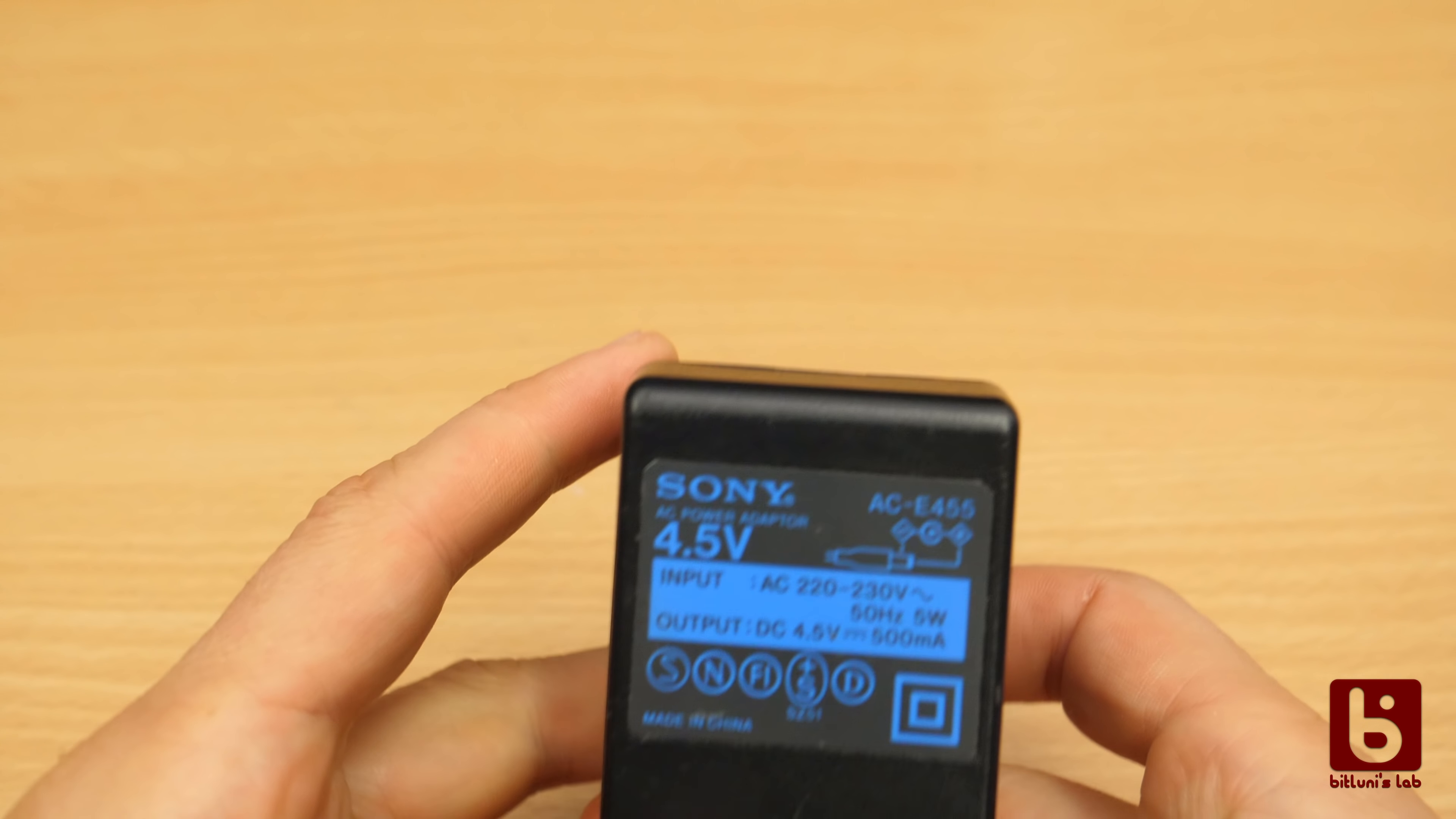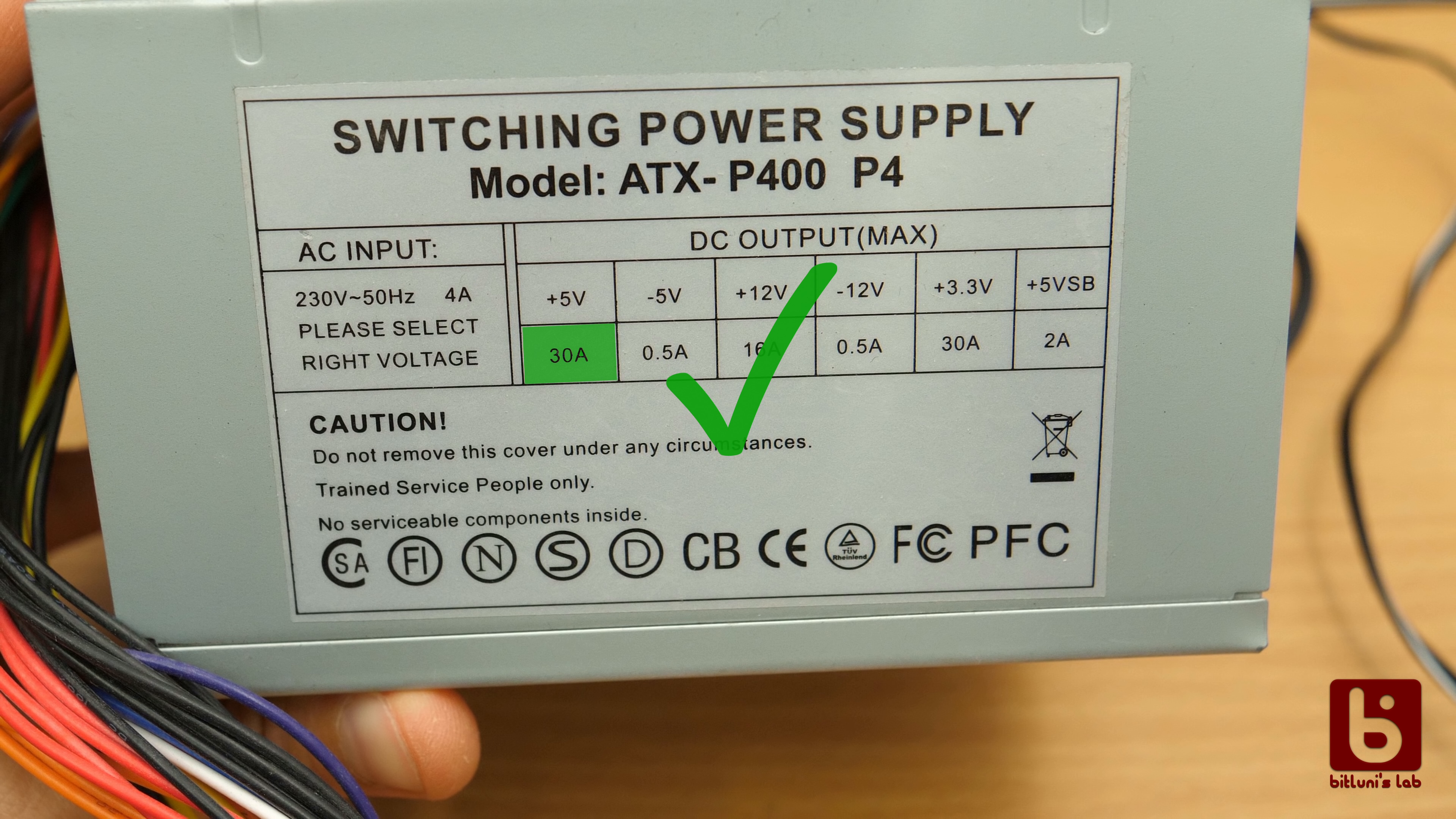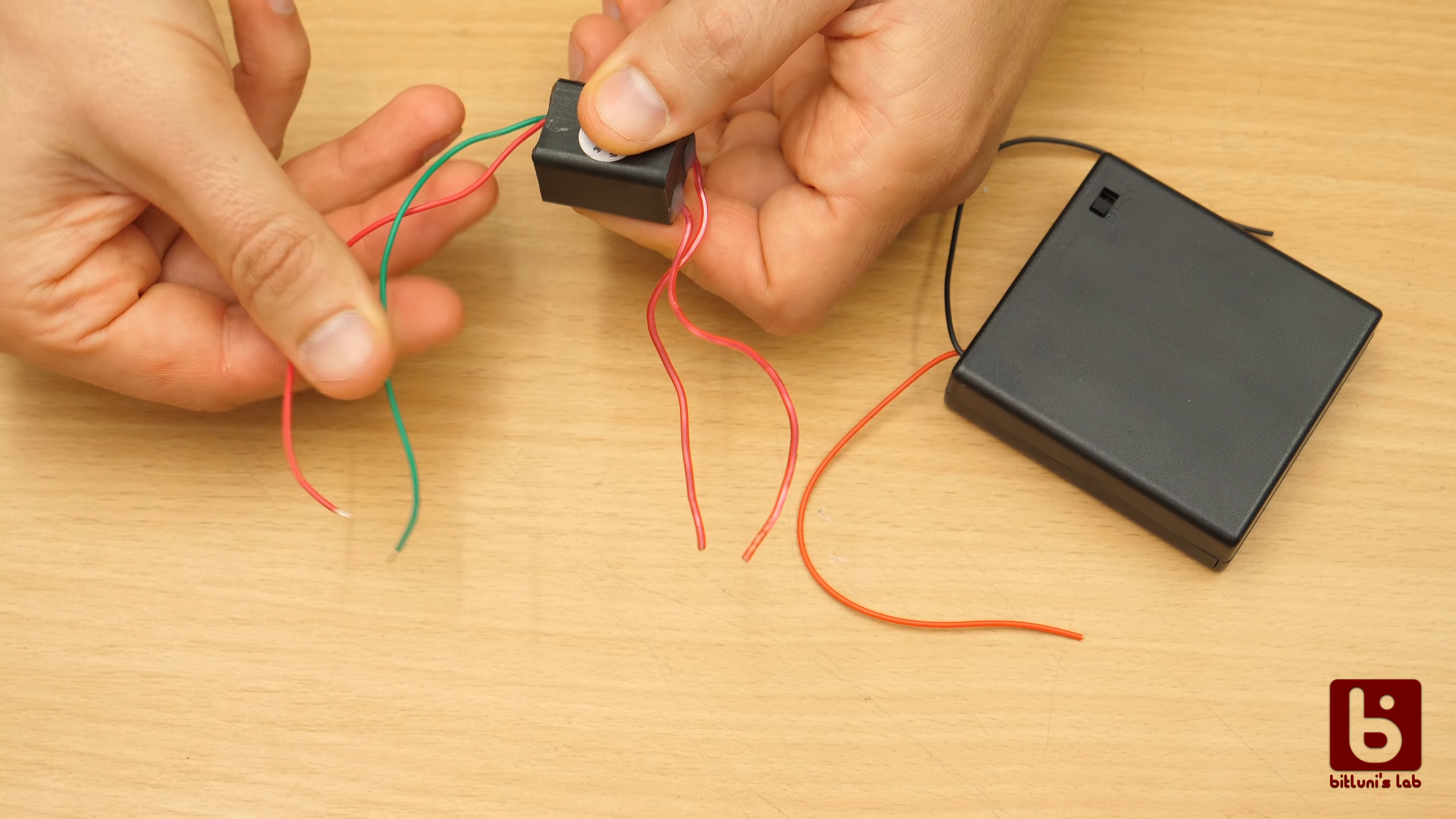We can run it from 4 AA batteries in one of these battery cases. If you like to run it from your power supply it has to be able to output at least 4 amps. That's not easy to find. The AA battery solution is probably the easiest one.